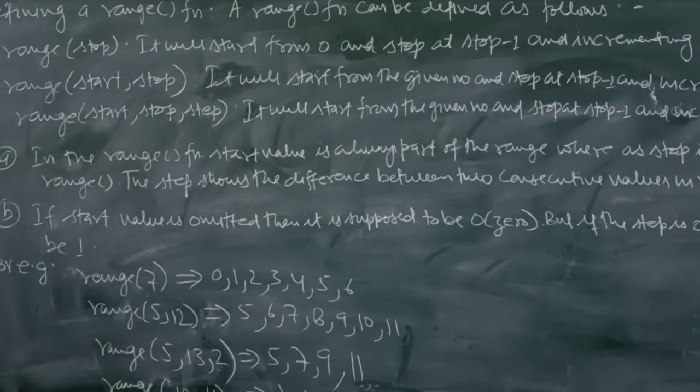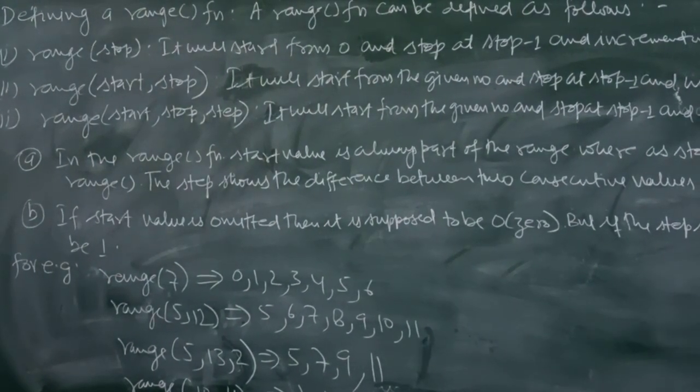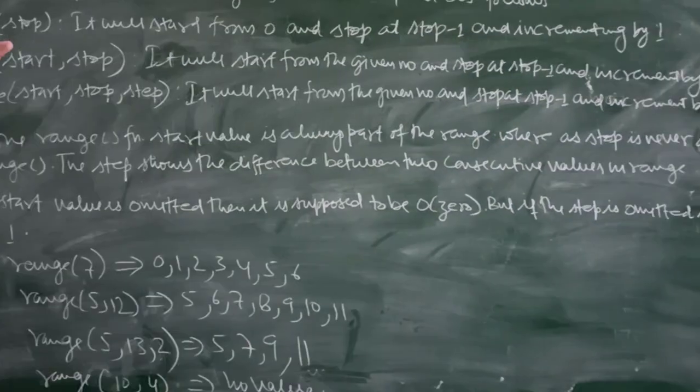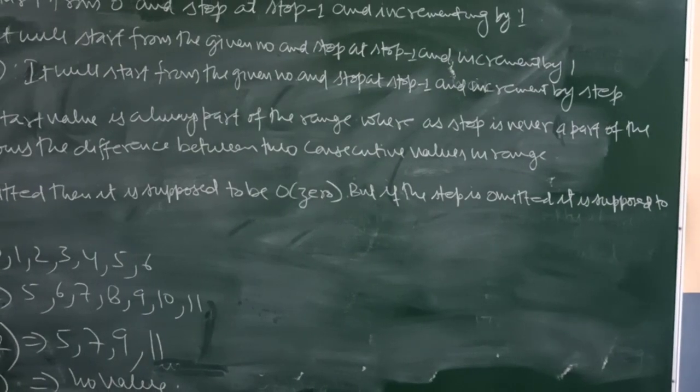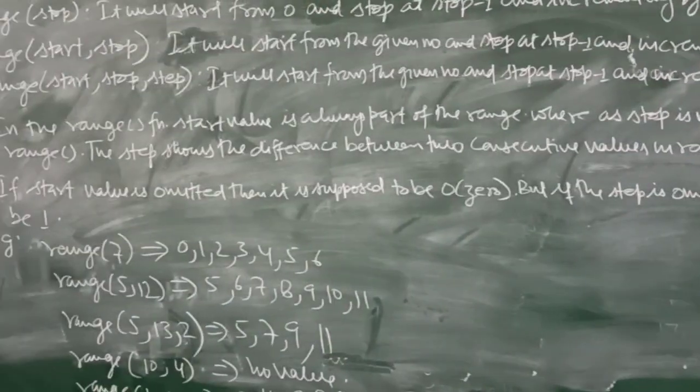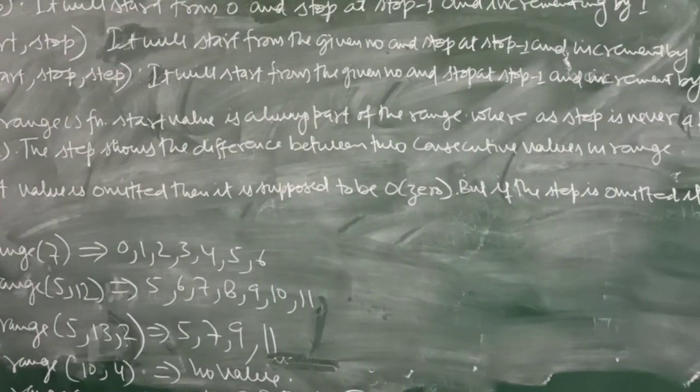The range function has the following properties: First, start value is always part of the range, whereas stop is never part of the range. Step shows the difference between two consecutive values in range.